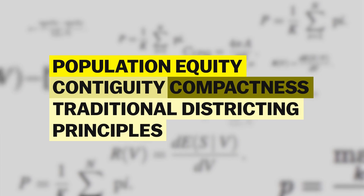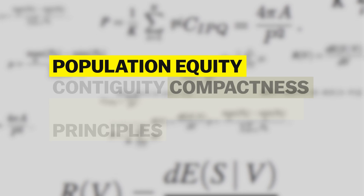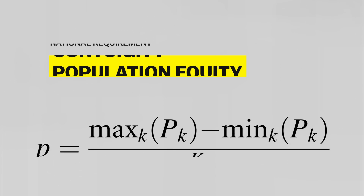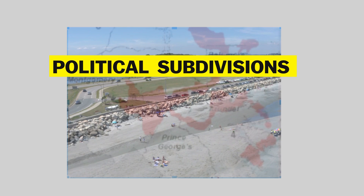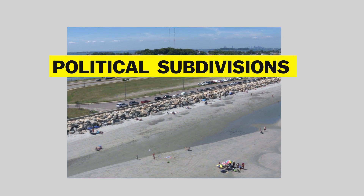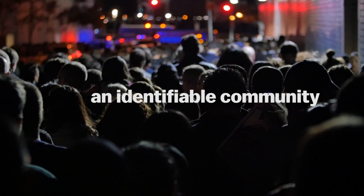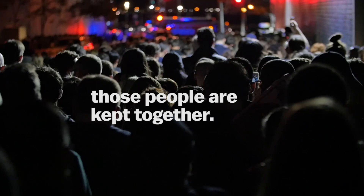The team started developing their tool by identifying what criteria are important to the court. Some criteria are required by law. For instance, we have to have about the same number of people in every district, and all districts have to be contiguous — meaning they can't be broken up into pieces. The court also wants districts that preserve political subdivisions like cities, counties, and municipal boundaries, keeping identifiable communities of like-minded individuals together.